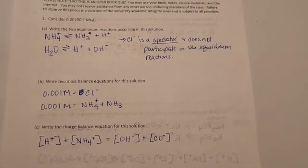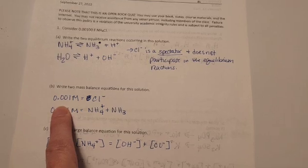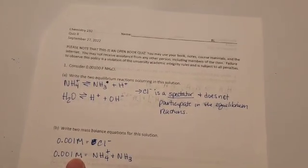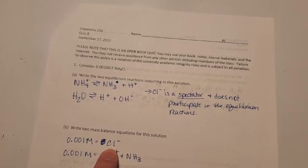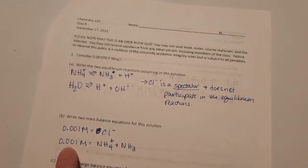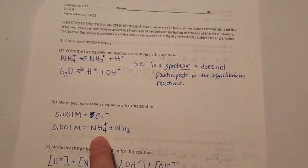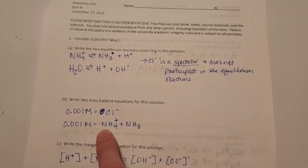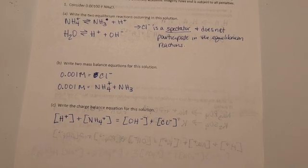Now, the second part of this asks for the mass balances. So this is a pretty much a one-to-one equation. So you've got 0.001 molar of the chloride ion and then 0.001 molar of both the ammonium and ammonia. Okay, because they both have to add up to be that original mass.